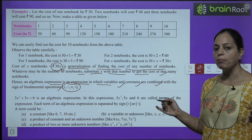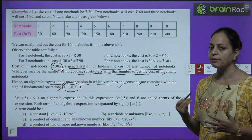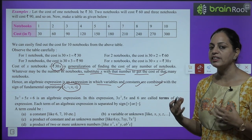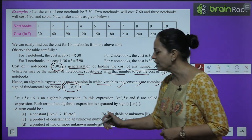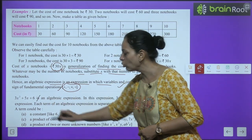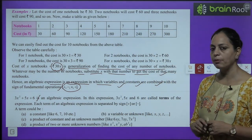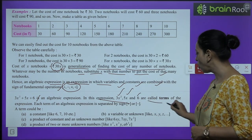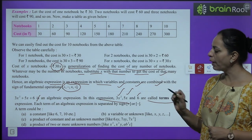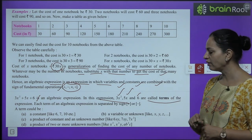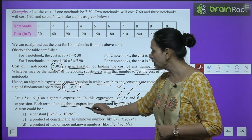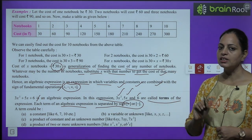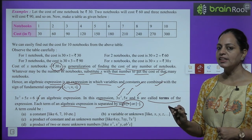When letters and numbers combine with plus, minus, multiply, or division signs, we get an algebraic expression. For example, 3x² + 5x + 6 is an algebraic expression. In this, 3x², 5x, and 6 are called the terms. Each term of an expression is separated by a plus or minus sign.